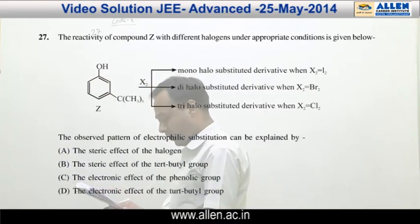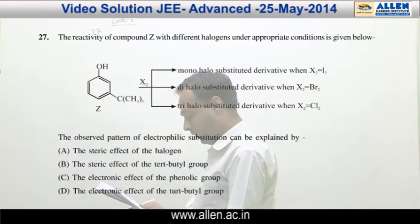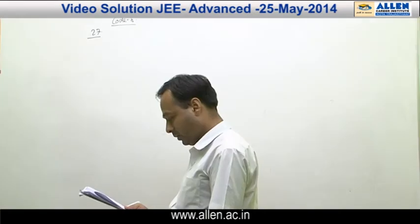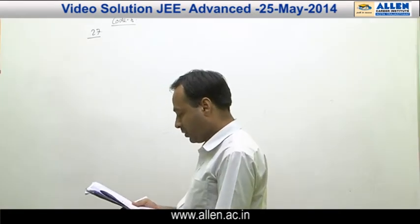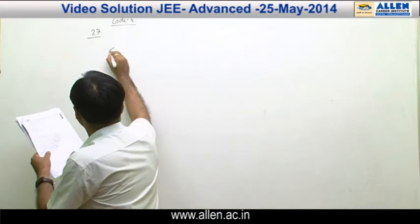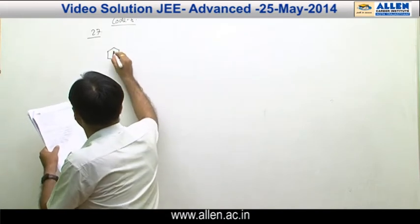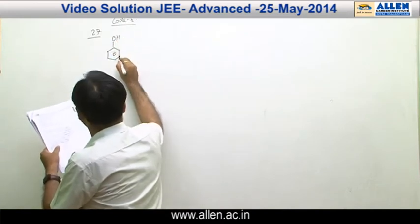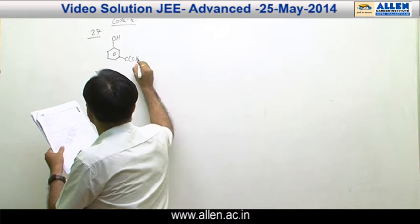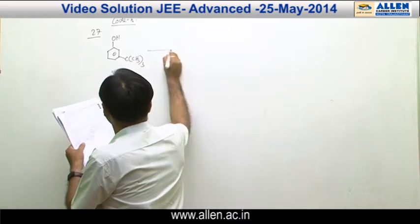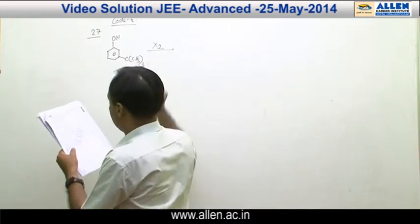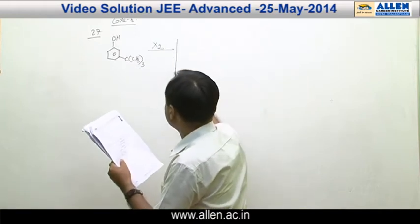The question is given: the reactivity of compound Z with different halogens under appropriate conditions is given below. So Z is given as OHC-C(CH3)3. X2, there are three halogens.